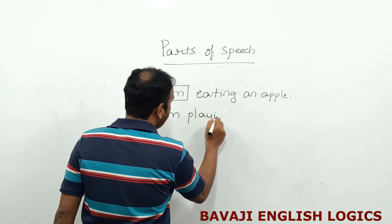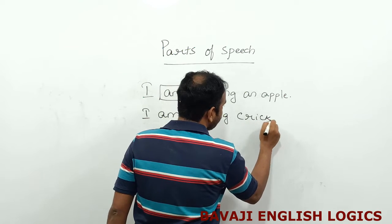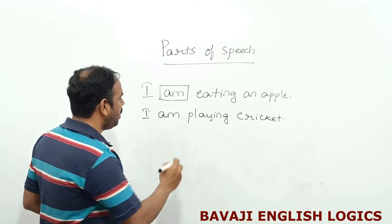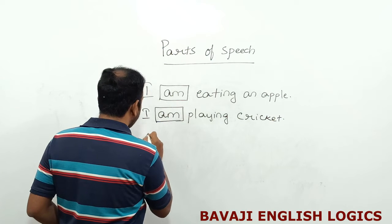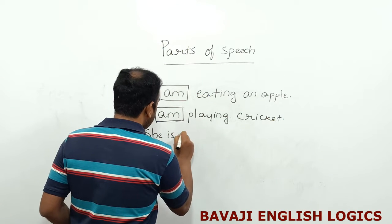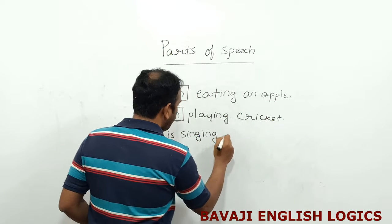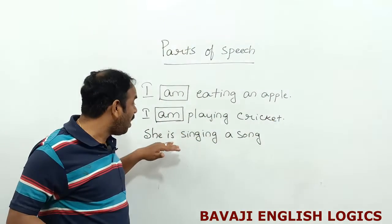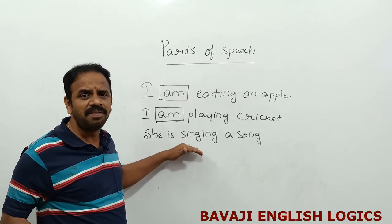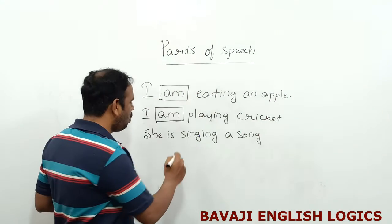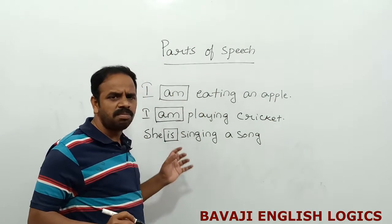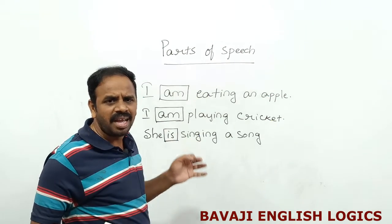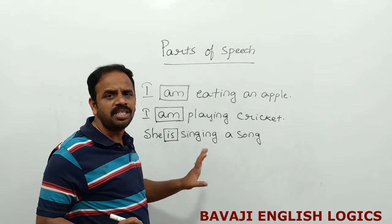I am playing cricket. In this sentence, playing is the main verb and am is the auxiliary verb. She is singing a song. In this sentence, singing is the main verb and is is the auxiliary verb. So an auxiliary verb supports the main verb and indicates the mood, voice, or tense of the sentence.